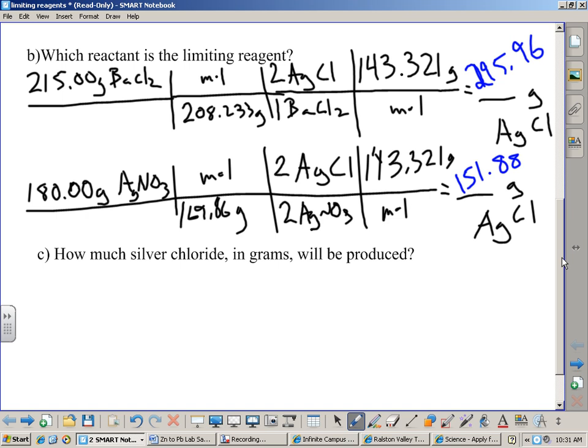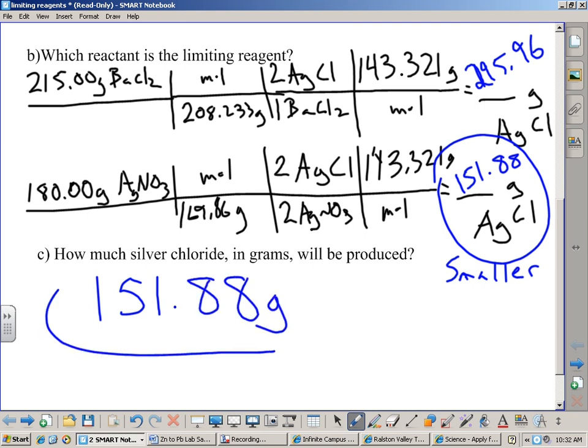Then we flip it around. We have 180 grams of silver nitrate and as much barium chloride as we could ever possibly need. That 180 grams would run out first and it would produce 151.88 grams of silver chloride. Now, which one of these is the correct answer? It is always the smaller of the two values. That's how you choose every single time. Whichever one is the smaller of the two. So, that's my answer to C. 151.88 grams. And we've got the work right there to prove it. We're done. We've shown our work. We've got an answer. We're good to go with C.